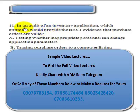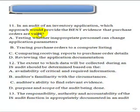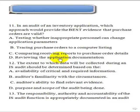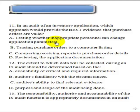Question 11: In an audit of an inventory application, which approach will provide the best evidence that purchase orders are valid? Option A is testing whether inappropriate personnel can change application parameters. Option B is tracing purchase orders to a computer listing. Option C is comparing receiving reports to purchase order details. Option D is reviewing the application documentation. The best answer is A — testing whether somebody can actually modify the system without authority, meaning that person can generate an illegal purchase order.